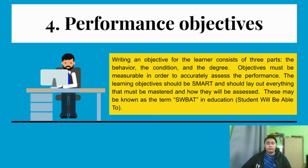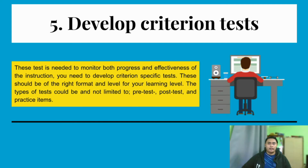The fourth step is Performance Objective. You write down an objective for the learner conceived of three parts: the behavior, the condition, and the degree. Objectives must be measurable in order to accurately assess performance. The learning objective should be SMART and should lay out everything that must be mastered and how it will be assessed. This may be known as SWBAT in education — Student Will Be Able To. You need to lay out your goals, your objective, and what is needed to achieve them.